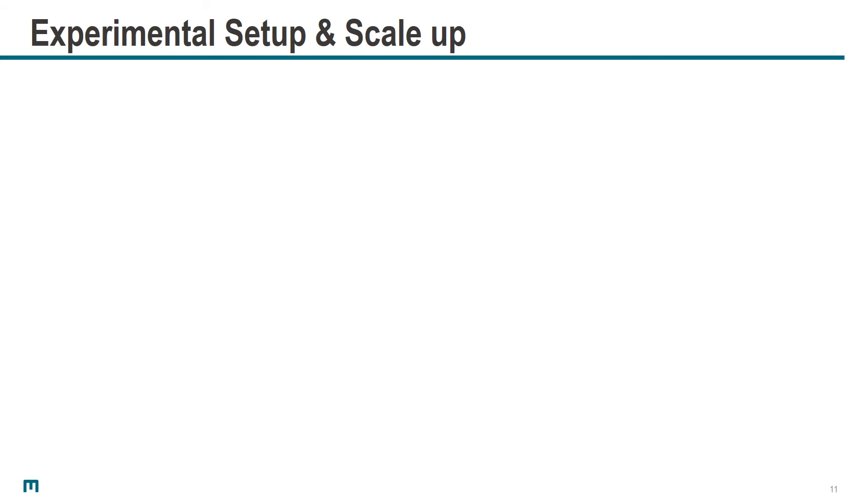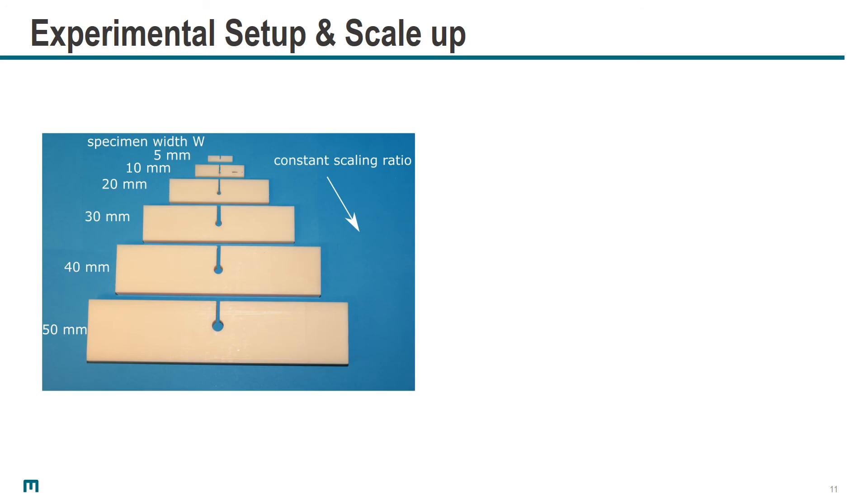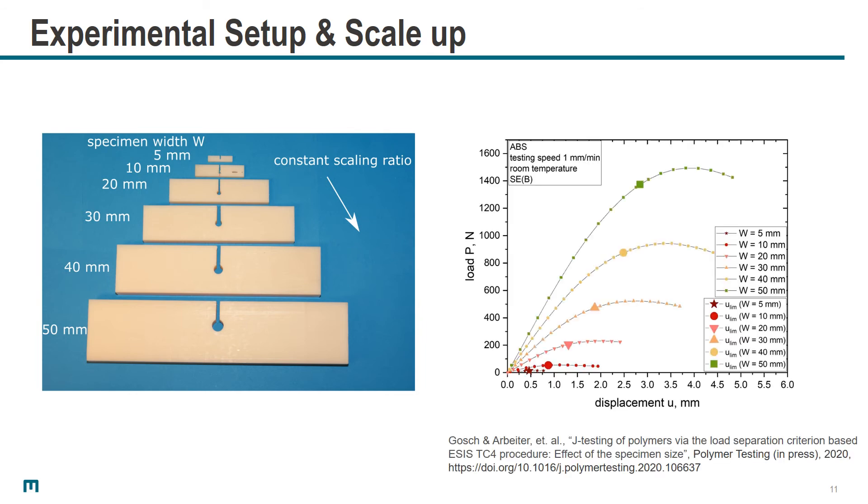This question leads us to our experimental work. I'd like to show the specimens we used and the scale-up to determine the geometry dependency of J_1 Lim and MS. We used single-edge-notched bend specimens, keeping the ratio constant and just increasing the overall size, as shown on the left-hand side. We scaled our SENB specimens, here shown as blunt-notched specimens, from W (the width) of 5 millimeters up to 50. We recorded for both blunt and sharp-notched specimens the load displacement curves, as shown here, for W 5 up to 50, in order to determine the load separation curves.